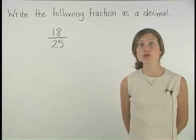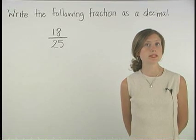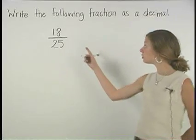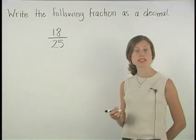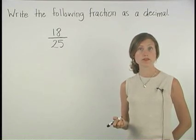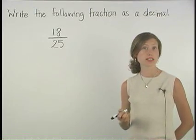Since decimals represent fractions with denominators of 10, 100, 1000, and so on, in order to write 18 25ths as a decimal, we need to find a fraction equivalent to 18 25ths with a 100 in the denominator.